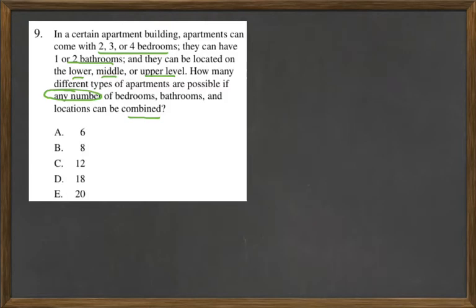if there are any number of combinations, then really all we have to do is find out how many options are available for each category and multiply them.